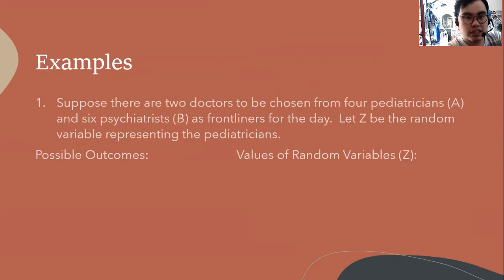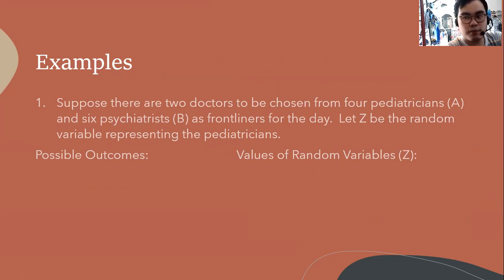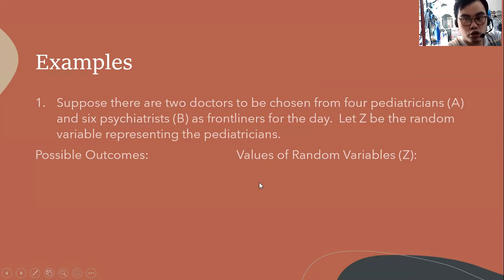Our first example: suppose there are two doctors to be chosen from four pediatricians represented by A and six psychiatrists represented by B as front liners for the day. Let Z be the random variable representing the pediatricians. We will list all possible outcomes represented by capital letters, then appoint Z as the representative for the random variable, since we have chosen two doctors.